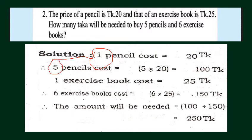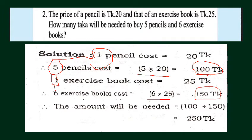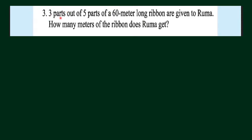Here is the answer pattern: 1 pencil costs 20 taka, so 5 pencils cost 5 × 20 = 100 taka. 1 exercise book costs 25 taka, so 6 exercise books cost 6 × 25 = 150 taka. Adding 100 taka and 150 taka, our required answer is 250 taka.